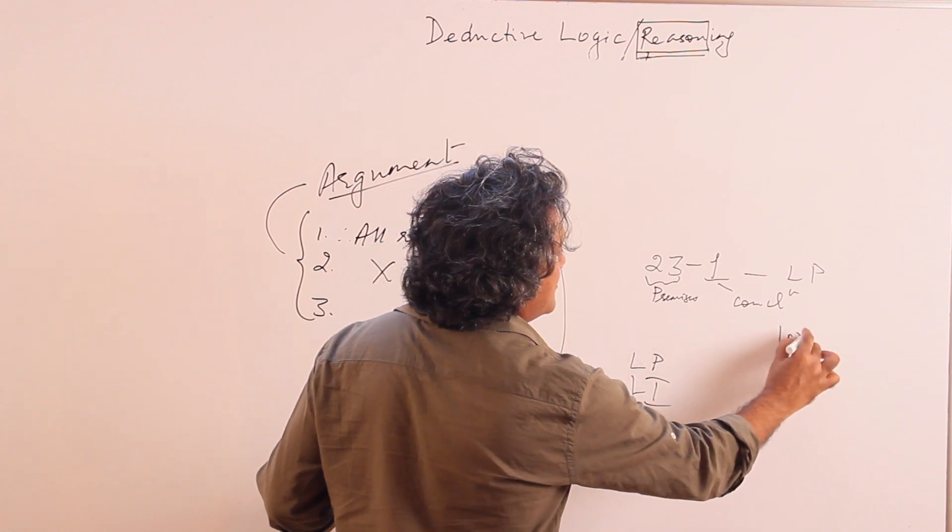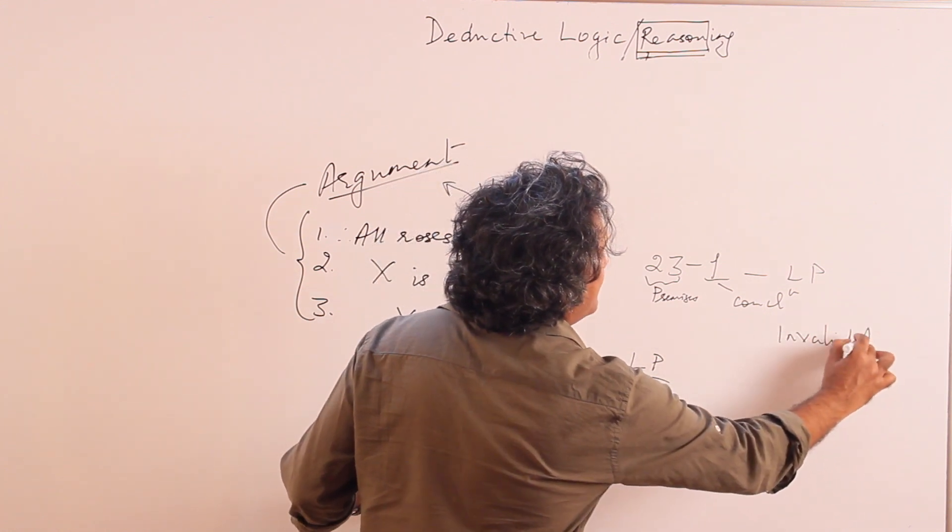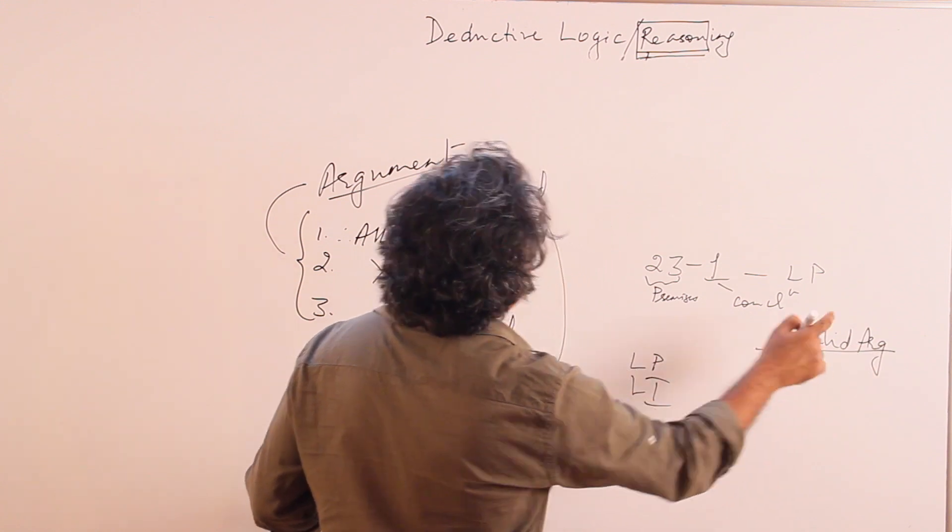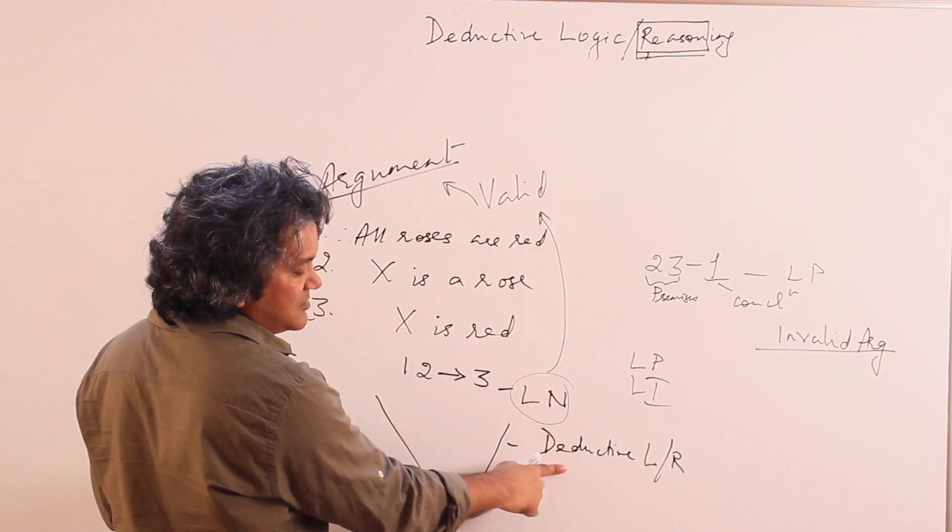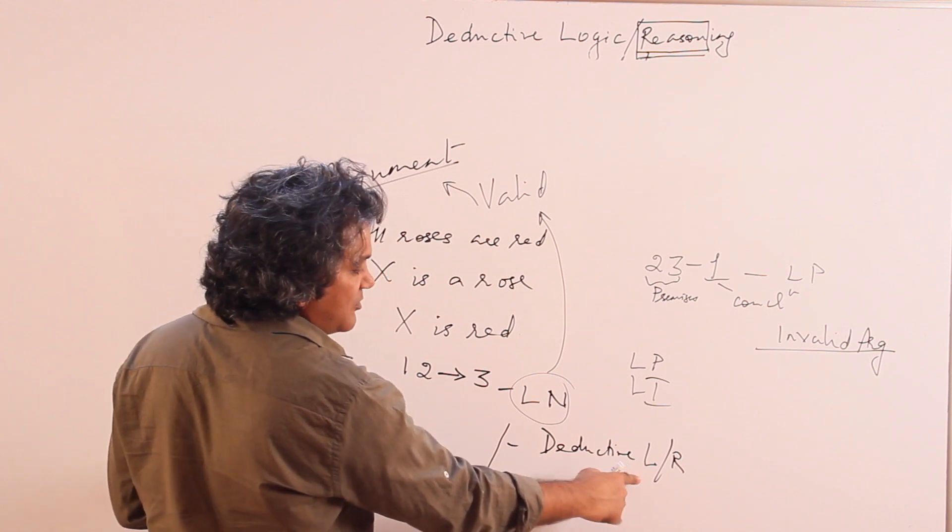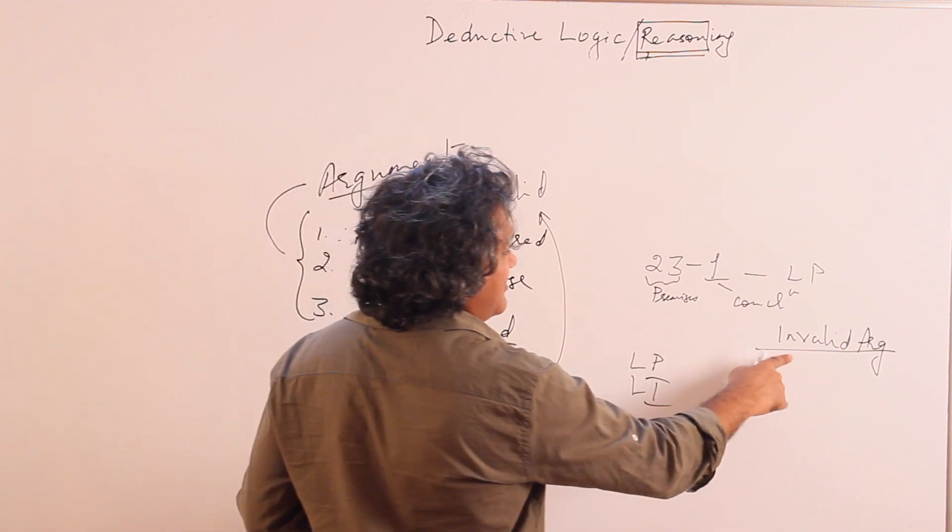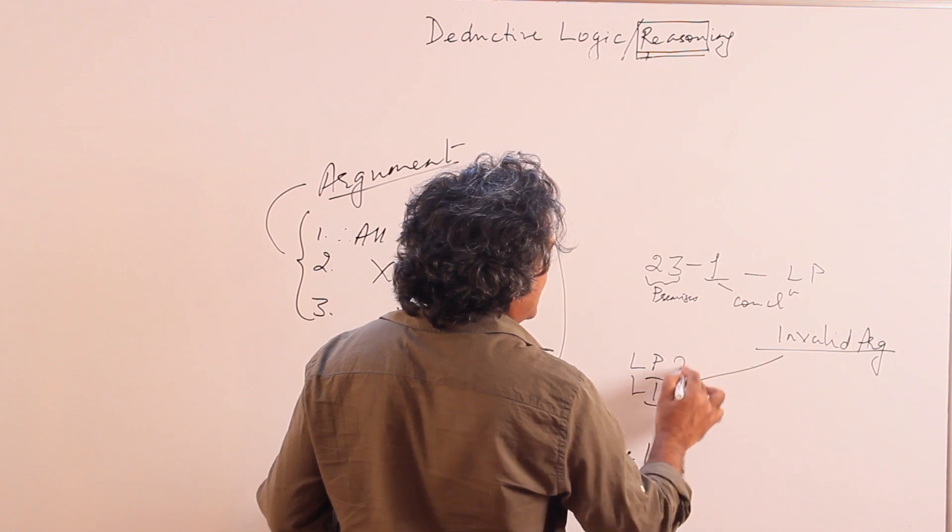So this is logically possible. Now this is an example of what is known as an invalid argument. So LN argument is a valid argument, which is also known as a deductive argument or deductive logic or deductive reasoning.